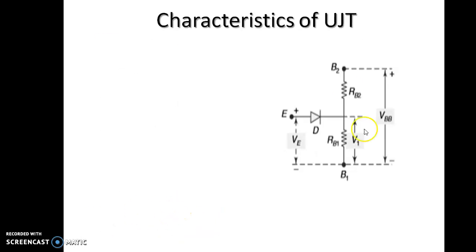As we have seen, with the emitter open, if voltage VBB is applied, a voltage drop V1 occurs across RB1 and this voltage V1 reverse biases the PN junction and the emitter current is cut off.